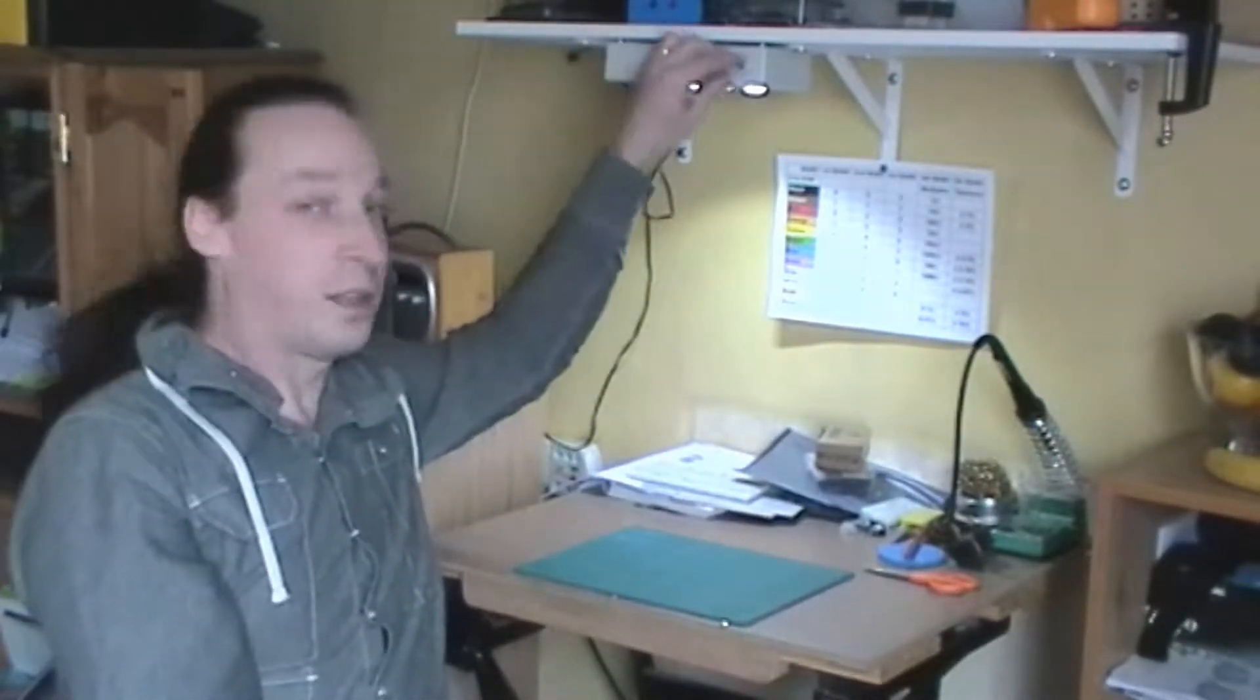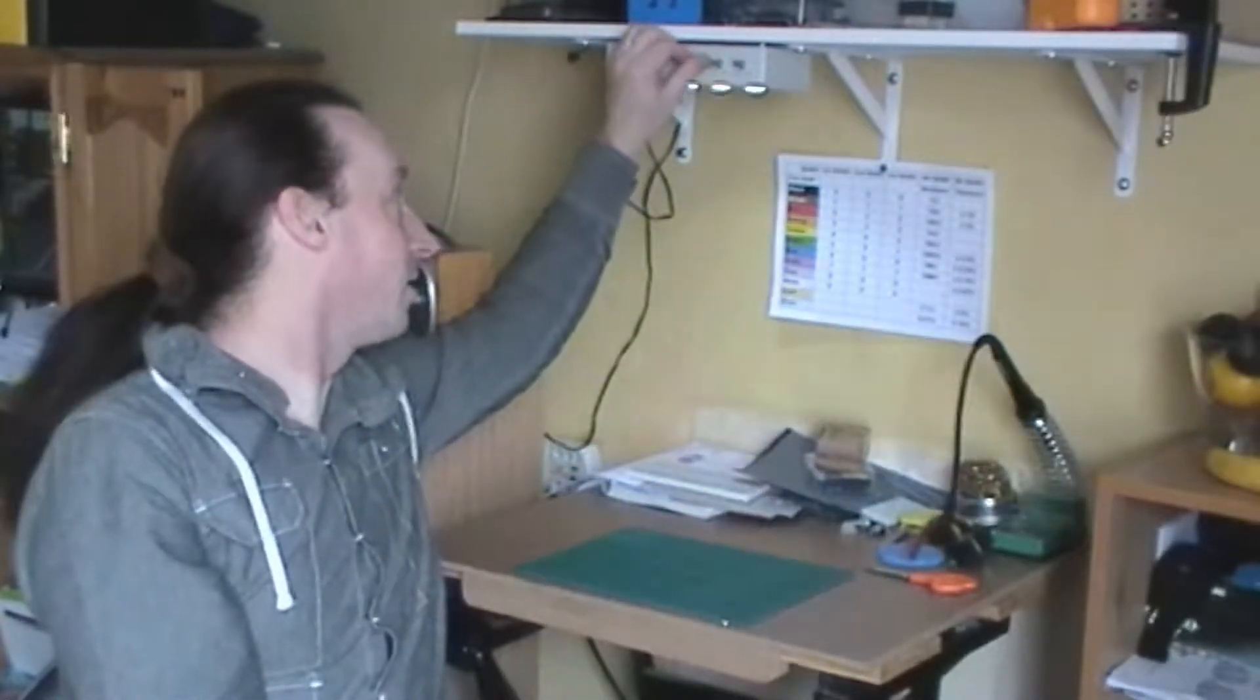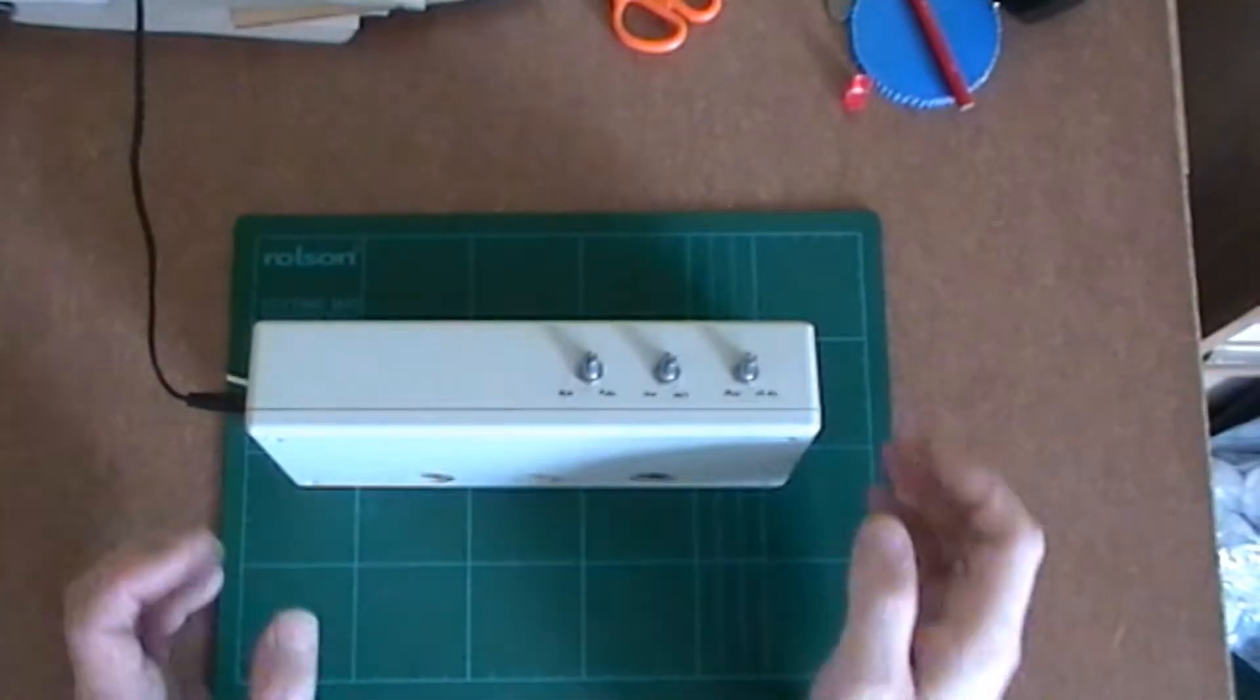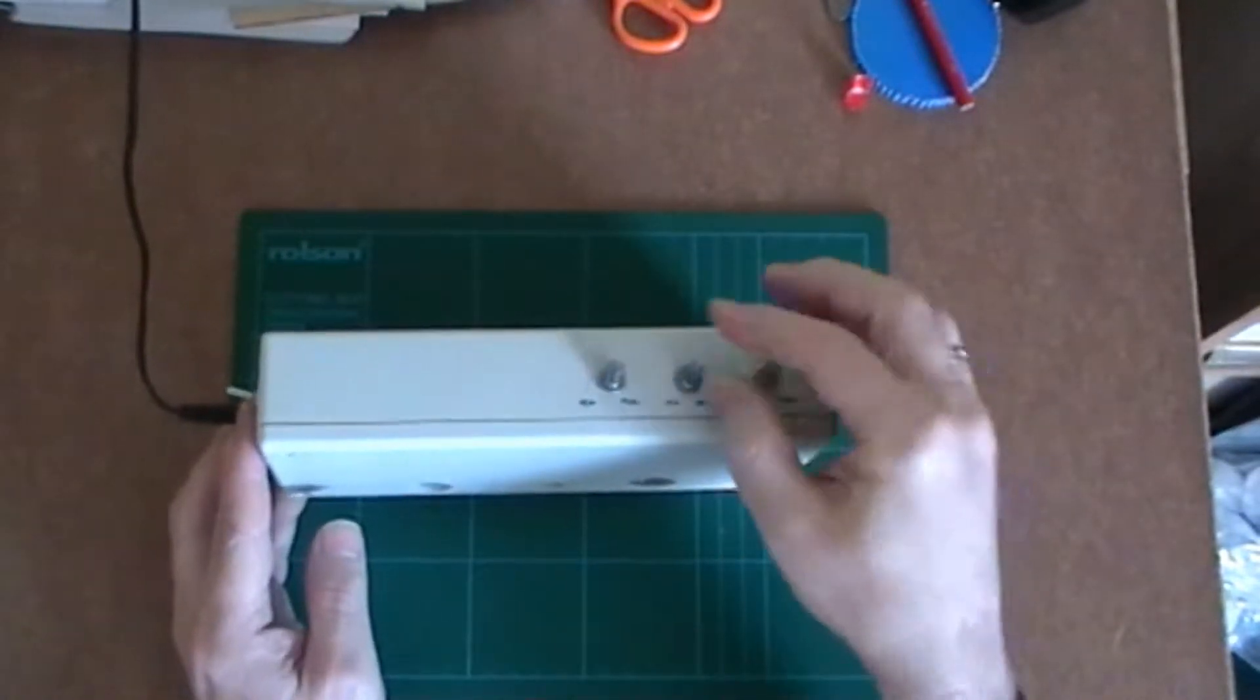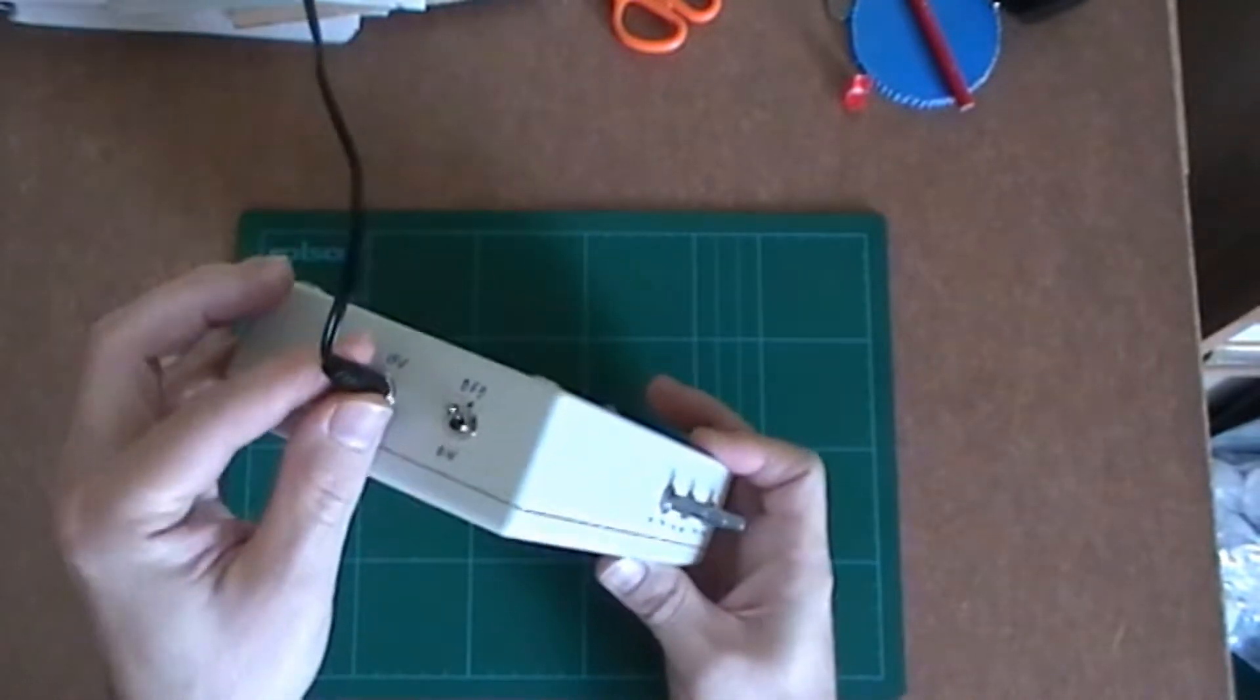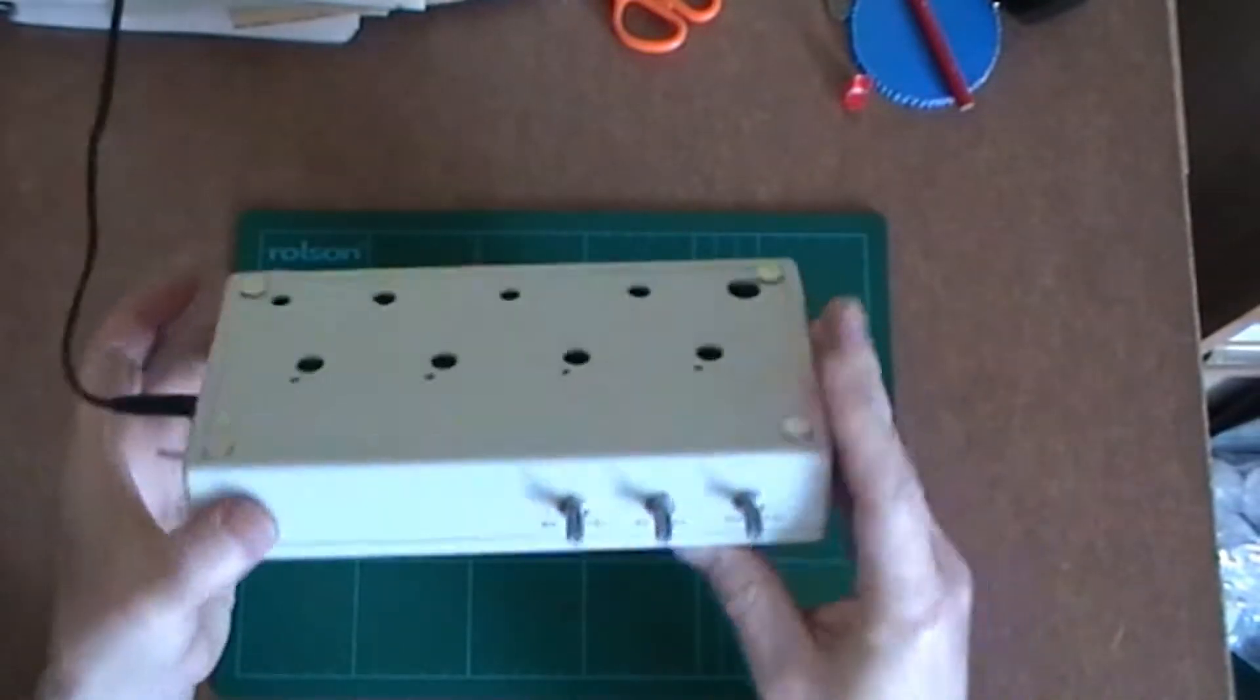So, there we go. I suppose what we ought to do is have a look inside the box and see how I managed to get it all in. Okay, let's turn that off and we'll have a look at it. Okay, so here's the box. As you can see, a control for each one. On-off switch, power, turn it on, and off. There we go. Not a problem.